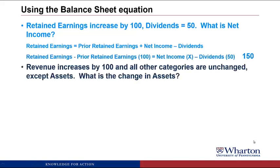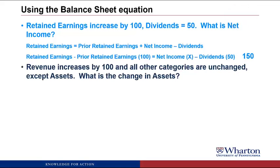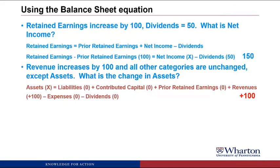Problem 6: Revenue increases by 100 and all other categories are unchanged except assets. What is the change in assets? We use the complete balance sheet equation: assets equals liabilities plus contributed capital plus prior retained earnings plus revenues minus expenses minus dividends. Revenue went up by 100, everything other than assets is unchanged — so it's not a trick question. If revenue goes up by 100, the right side goes up by 100, so assets on the left also have to go up by 100 to stay in balance.